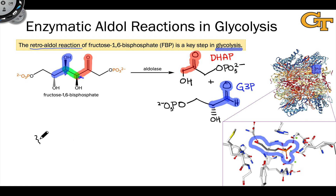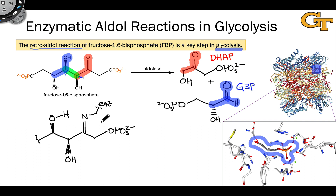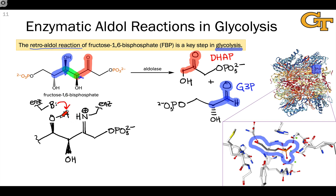Depending on the organism and the specific enzyme involved, this mechanism can happen a few different ways. One involves an imine intermediate: the substrate forms an imine with a lysine side chain in the enzyme, which gets protonated to form an iminium ion. This iminium ion is a nice leaving group, and provided we have a basic residue nearby the beta-hydroxyl group, the iminium encourages an elimination that amounts to a retroaldol reaction. This elimination gives an imine leaving group as well as the C=O double bond found in the aldehyde product. After hydrolysis of the imine intermediate back to a carbonyl, we get G3P from one half of the elimination and dihydroxyacetone phosphate from the other.